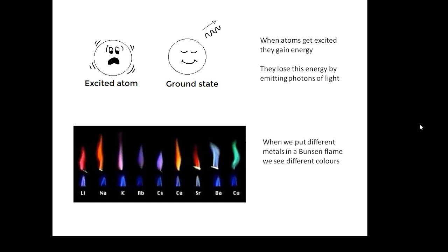If you put copper in a Bunsen flame, you see green. If you put sodium in a Bunsen flame, you see yellow. Different elements emit different colours, different wavelengths of light.